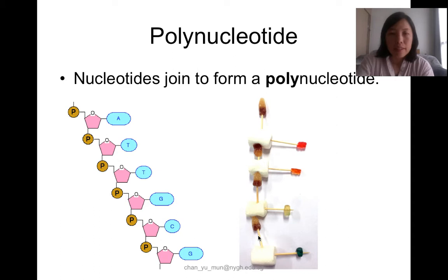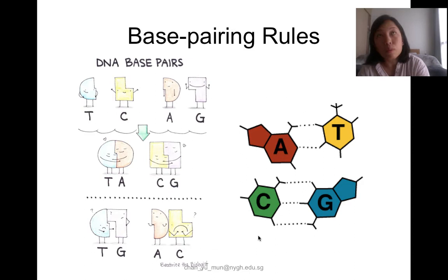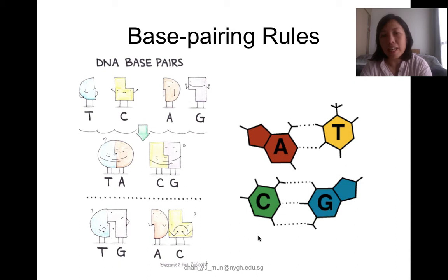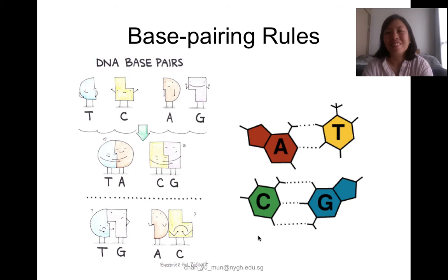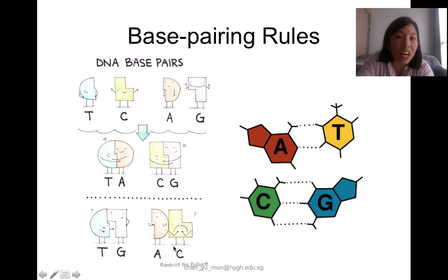Now, have you heard of the rules of complementary base pairing? There are four different nitrogenous bases in nucleotides. Adenine (A) always pairs with thymine (T), and cytosine (C) only pairs with guanine (G). This is what we call the rules of base pairing — they will not pair in any other way. Thymine will only pair with adenine; cytosine will only pair with guanine.